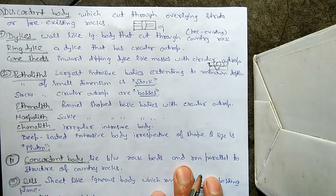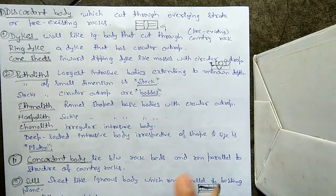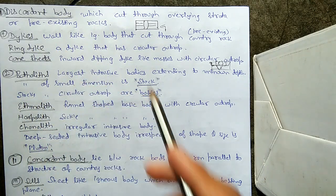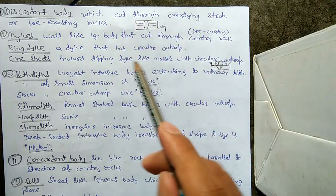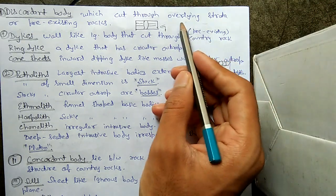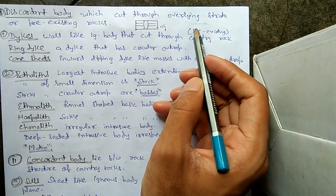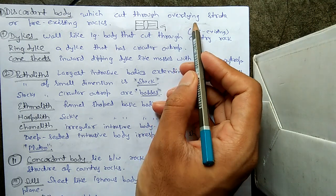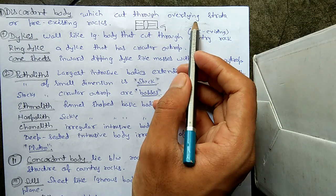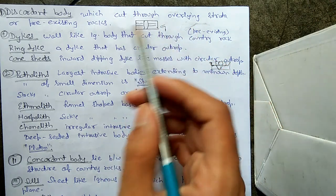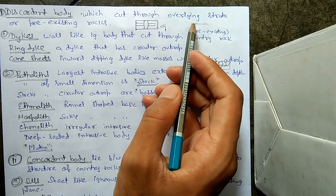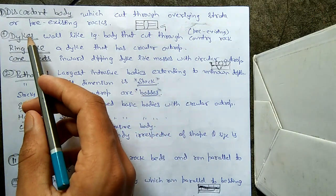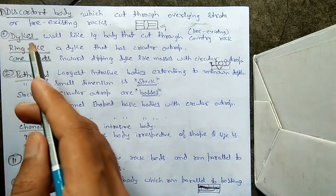Now let us look at discordant bodies within extrusive bodies. Discordant bodies are bodies which cut through overlying strata or pre-existing rocks. Suppose there is a pre-existing rock and a body comes cutting through it — that body is called a discordant body. Its subtypes are dykes, ring dykes, and cone sheets.